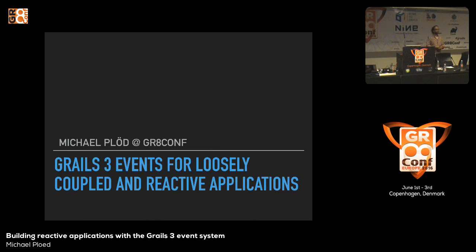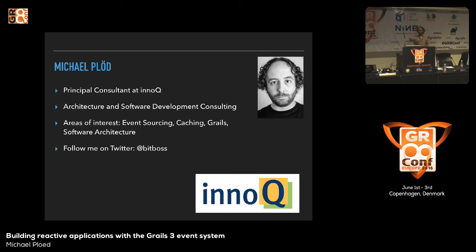The talk will be in two parts. First, I'll introduce you to the idea behind the event system — why it's a good idea from a software architecture and design point of view. We'll look at the APIs and annotations. The event system is based on the Spring Reactor project. We'll close with a short live coding demo where I refactor an application to use the event system to show how decoupling really works. You can download the project from GitHub — the link is on my last slide.